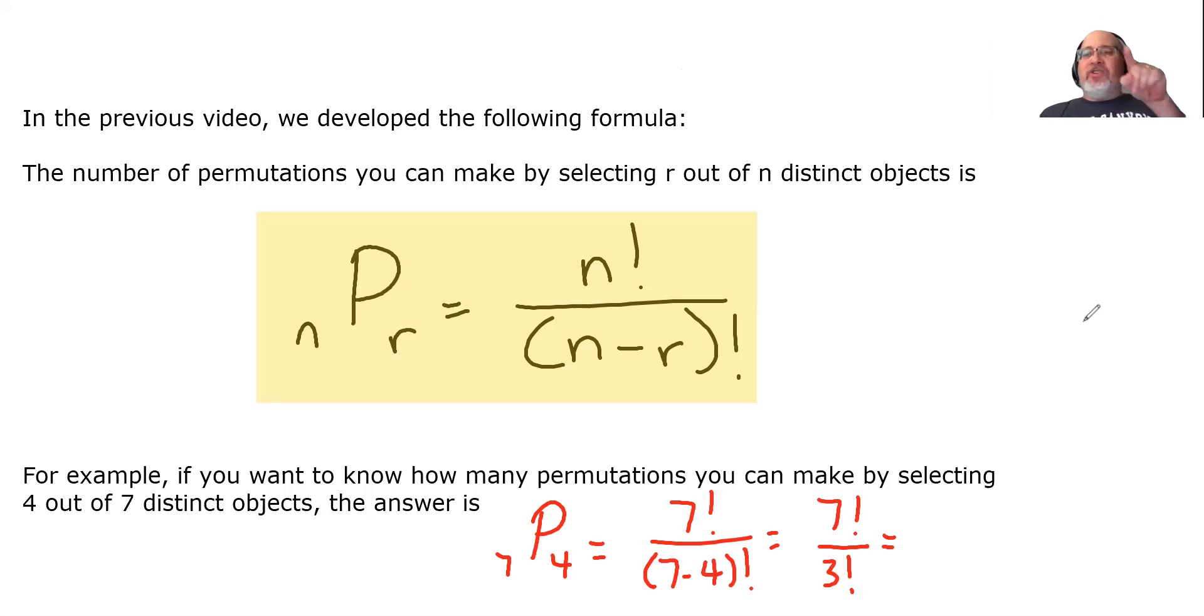Let's think about what that would look like if we expanded them out. The top would go 7 down to 1. The bottom would go 3, 2, 1. And so the only thing that would cancel would be 3, 2, 1. That would leave 7 times 6 times 5 times 4. And what does that equal? Well, 7 times 6 is 42, 5 times 4 is 20. 42 times 20 is 840.